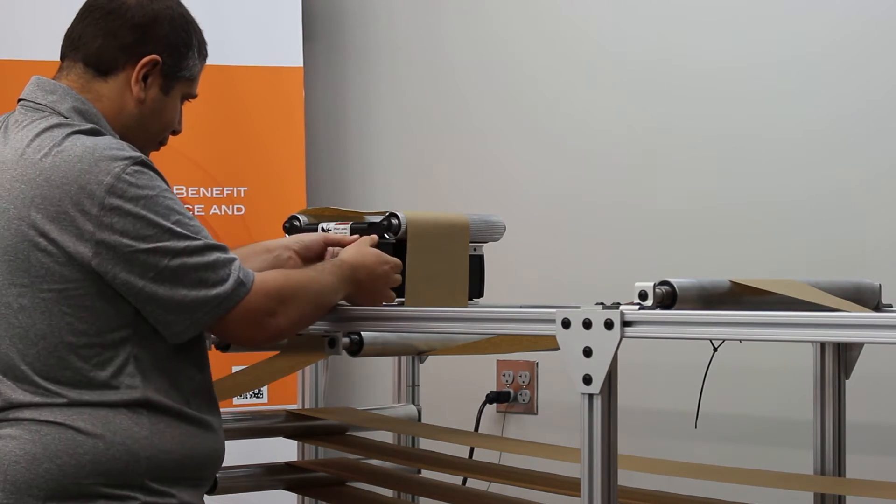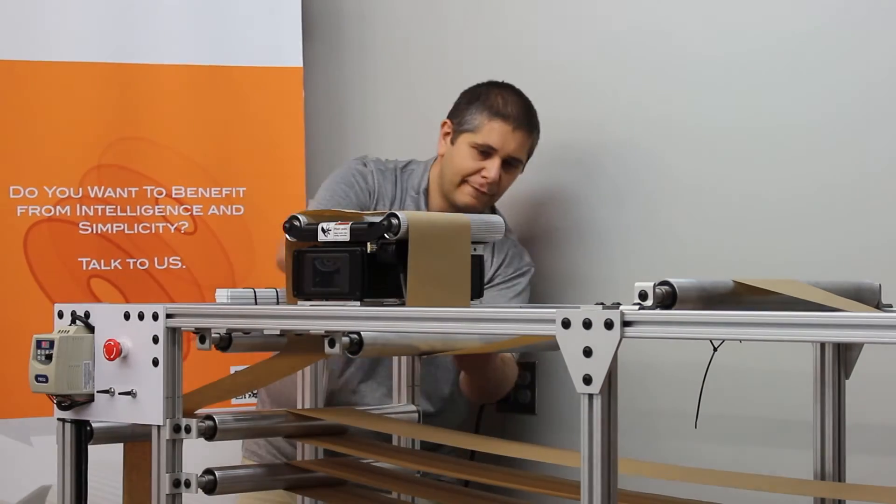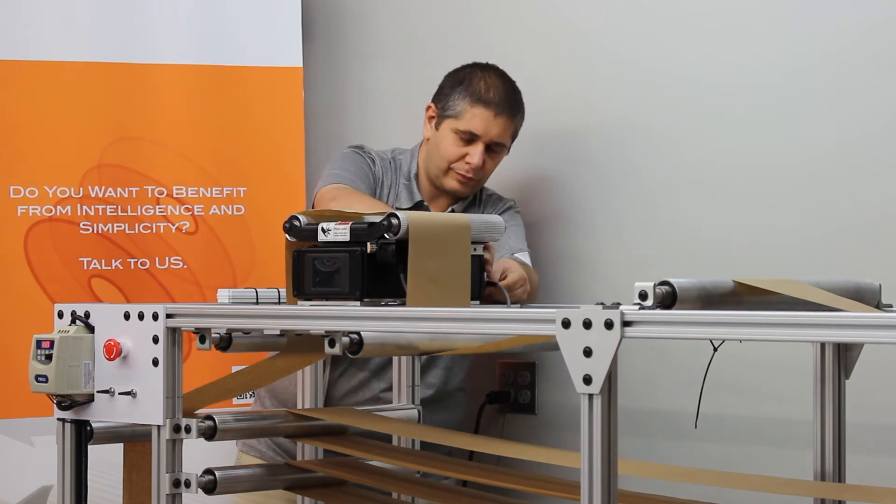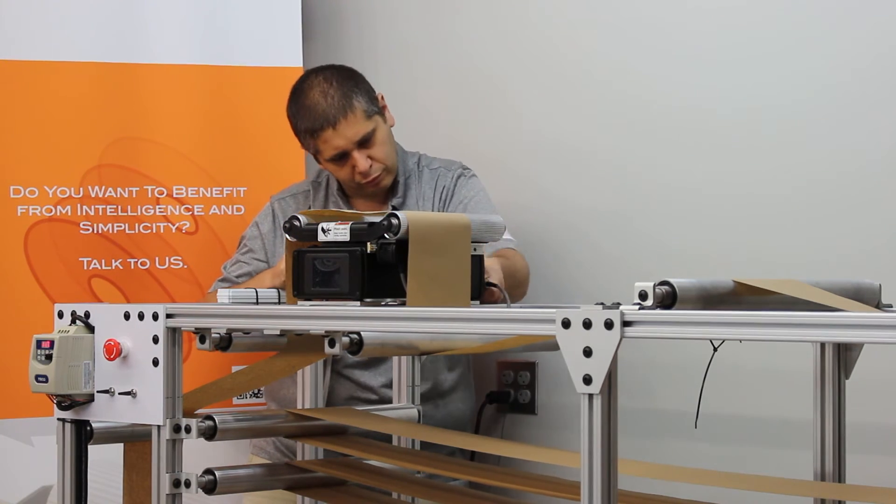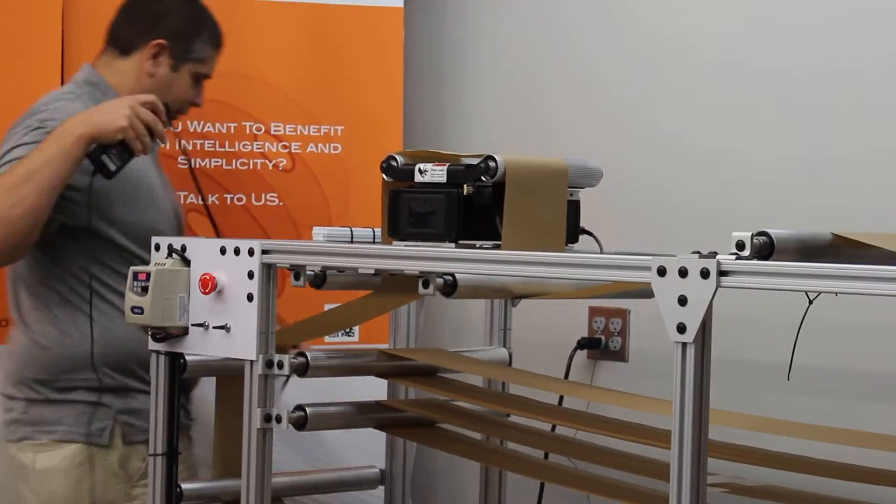Use the thumb screws to secure the sensor to a desired position. Using the 12-pin DIN connector on the sensor cable, connect the sensor to the web guiding system. Make sure to thread the sensor connector all the way through to secure it in place.